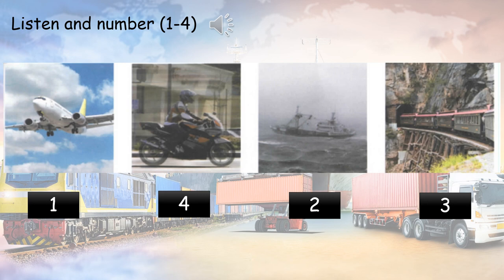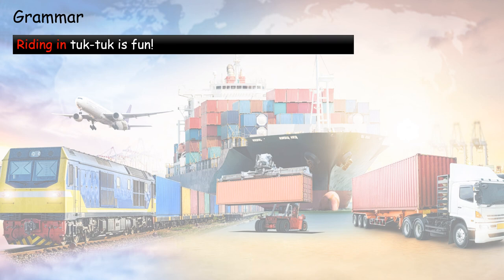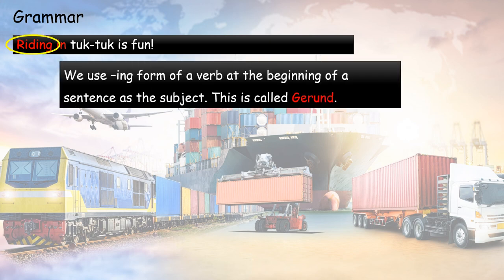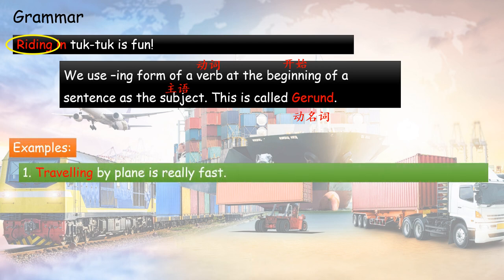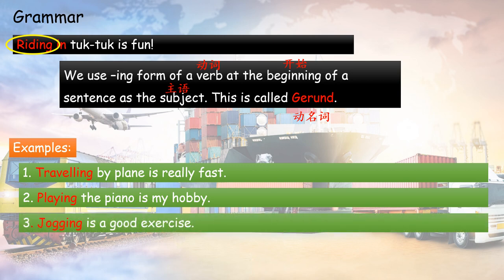Let's learn grammar. Riding in a tuk-tuk is fun. We use the -ing form of a verb at the beginning of a sentence as the subject. This is called a gerund. For example: Travelling by plane is really fast. Playing the piano is my favorite. Jogging is a good exercise. Travelling, playing, jogging — these are verbs with -ing at the beginning of sentences as the subject.